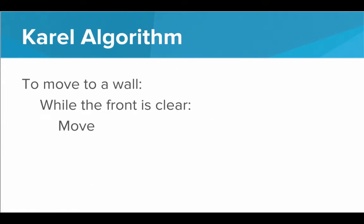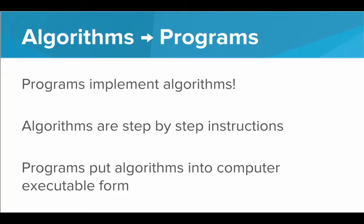Programs take these algorithms and put them into computer code. They put them in a programming language that implements the algorithm. So algorithms turn into programs — programs implement algorithms. Algorithms are the step-by-step instructions, and programs put these instructions into a computer-executable form.